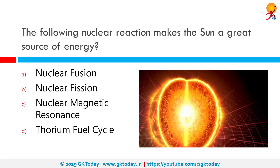Which nuclear reaction makes the sun a great source of energy? The correct answer is nuclear fusion. Nuclear fusion is a reaction in which two or more atomic nuclei are combined to form one or more different atomic nuclei and subatomic particles. The difference in mass between the reactants and products is manifested as either the release or absorption of energy. In the sun, helium and hydrogen atoms perform this reaction.